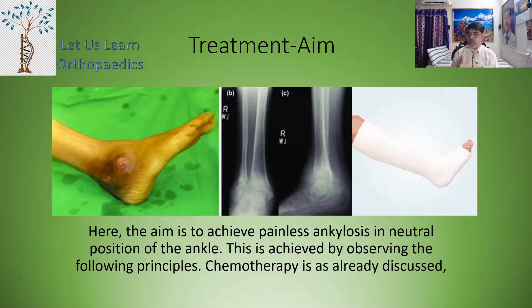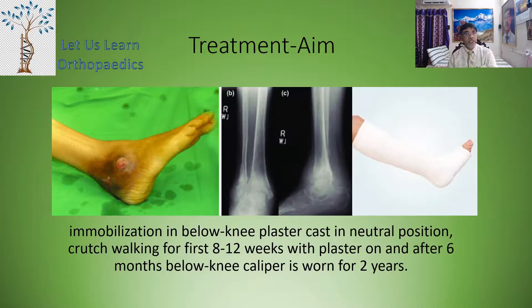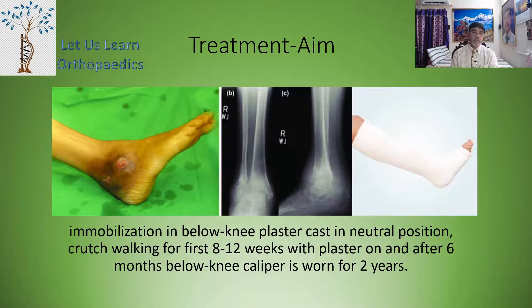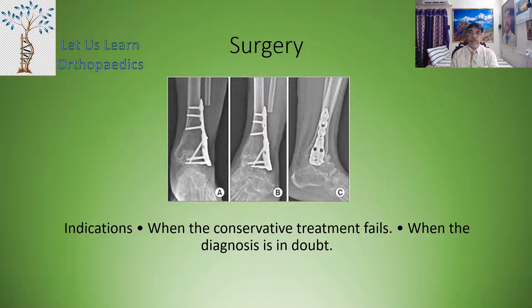This is achieved by following these principles: chemotherapy is started first. Then immobilization in a below-knee plaster cast in a neutral position, as shown in the third picture. Crutch walking for the first 8 to 12 weeks with the plaster on. After 6 months, a below-knee caliper is worn for 2 years. With this treatment, sometimes it fails, and hence we need to go for surgery.